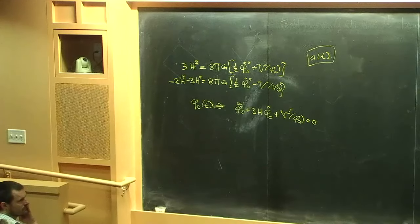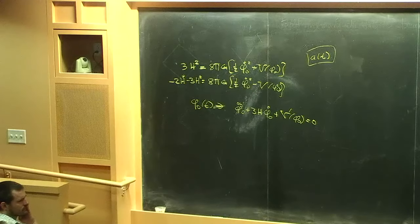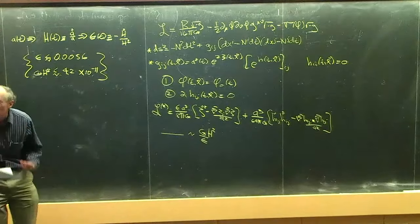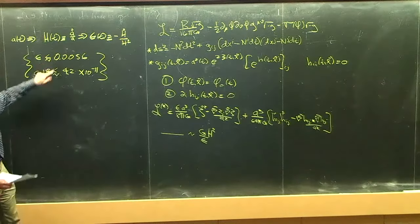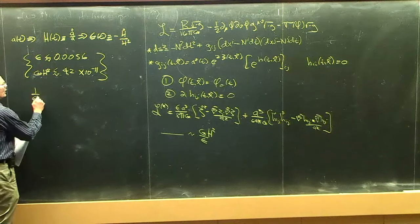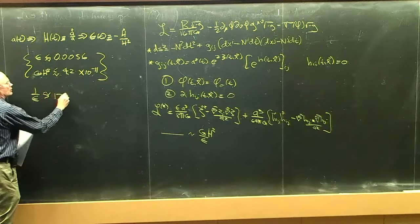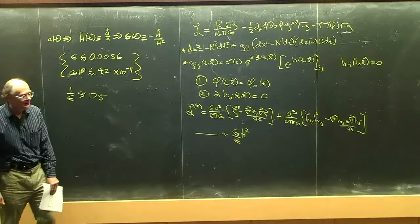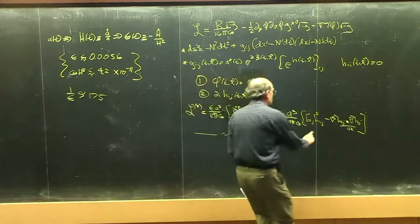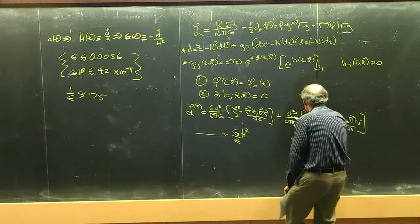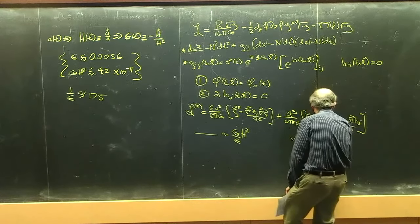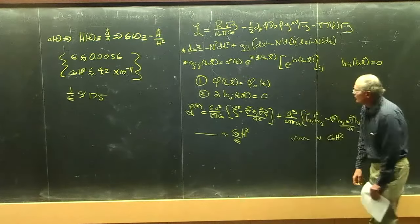The Zeta-Zeta correlator — the Zeta-Zeta propagator — has this infamous factor of one over Epsilon. This is hugely important because Epsilon is so small. One over Epsilon is greater than about 175, a number which might eventually be as famous as 137. The graviton kinetic term does not have that factor.